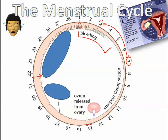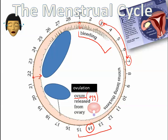Around day 14 — and this is also an average — the ovum, which is the egg cell, actually gets released. So if a man and woman are trying to have a baby, this is the ideal time to try to introduce sperm cells to the egg cell. The fancy name for the egg being released is called ovulation.